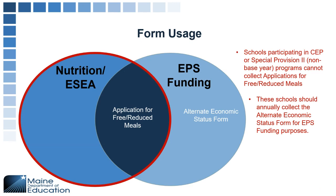Historically, the free and reduced lunch meal applications overlapped completely and could be used for nutrition, ESEA, and EPS purposes. However, with the implementation of special provision 2 and CEP, some districts may not be able to collect the free and reduced lunch form — which is why we now have the alternate form for EPS purposes. This form is not to be used by nutrition department staff; it should only be reported by data specialists for EPS funding only.